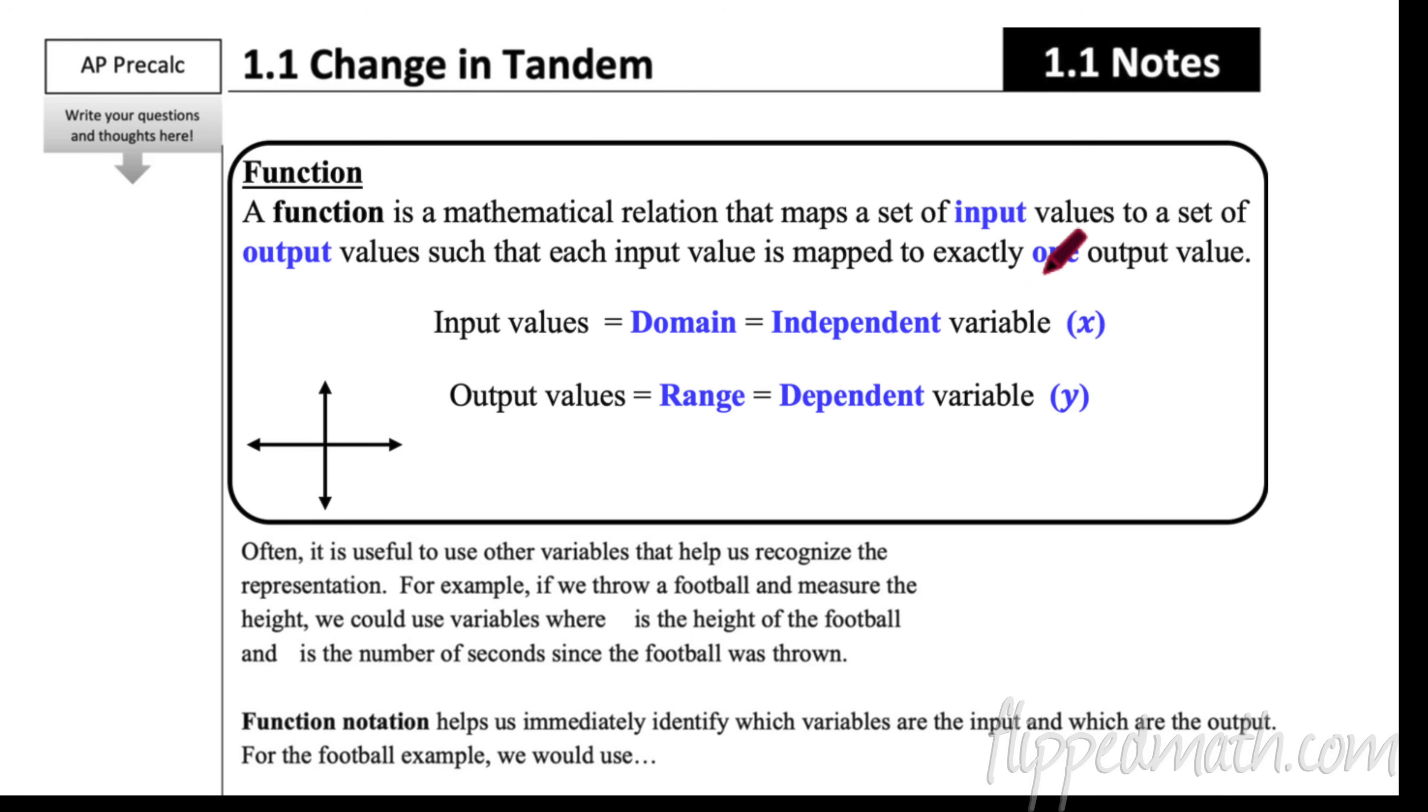A function is a mathematical relation that maps a set of input values to a set of output values such that each input is mapped to exactly one output. Now we have different names for the input and the output. Sometimes we go by domain, that's the input. Sometimes we call it the independent variable, we usually use an X for this. The output values, that's what we call the range or the dependent variable. In AP Stats we call that the response variable, but that is usually denoted with a Y. So it's good to label your axes when you're looking at a function on a graph.